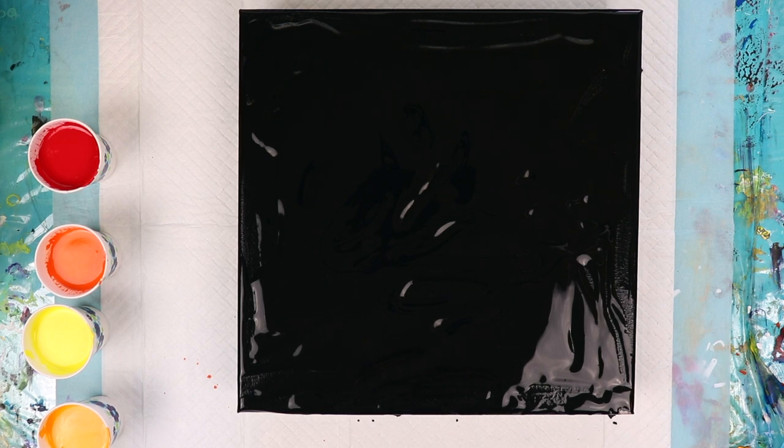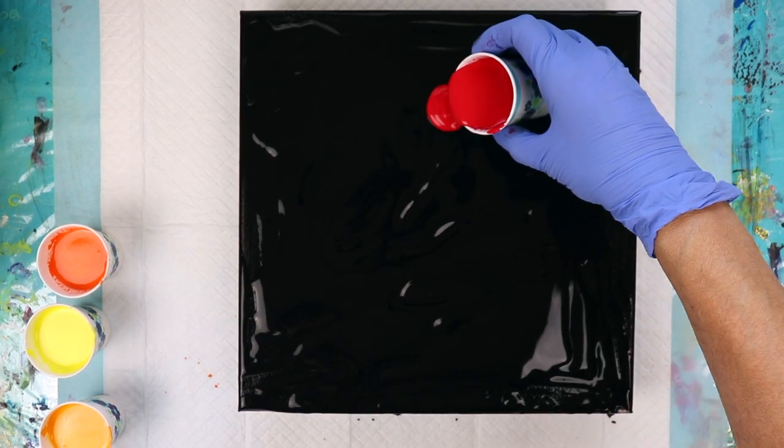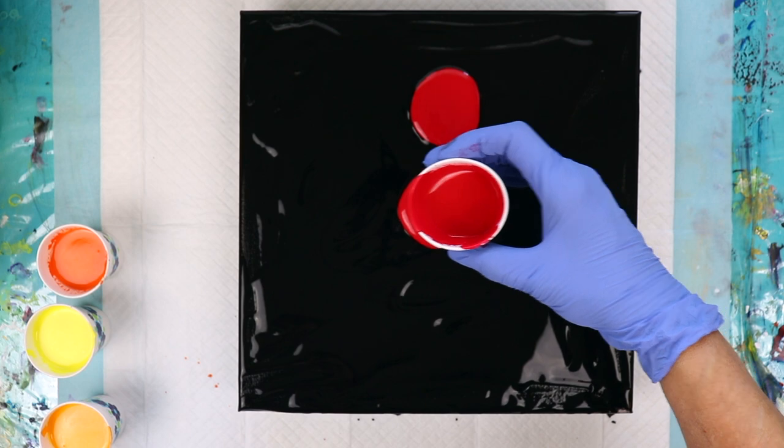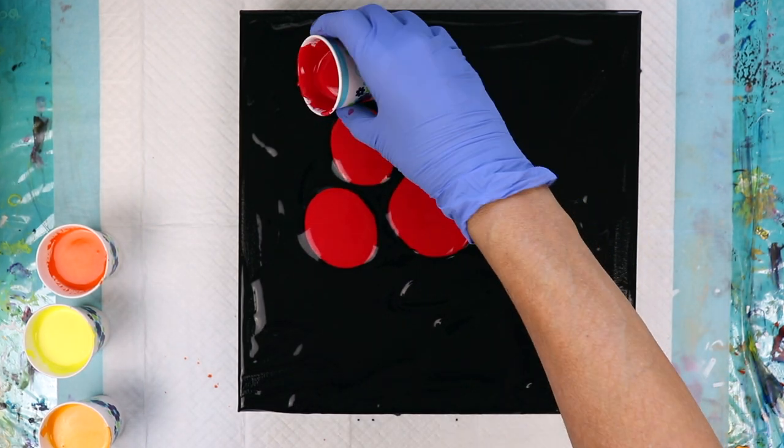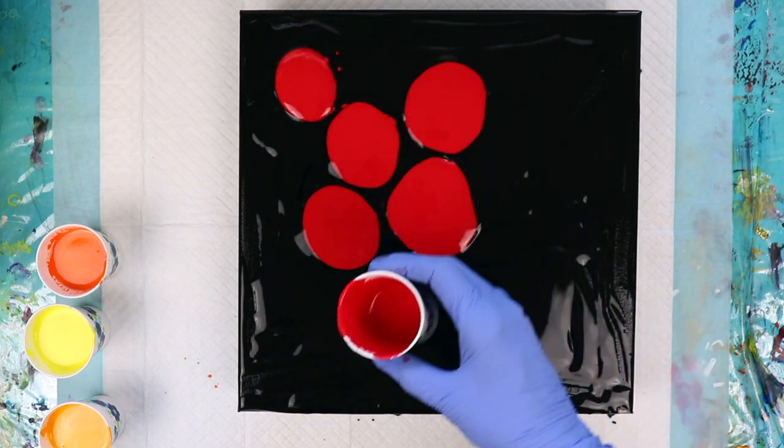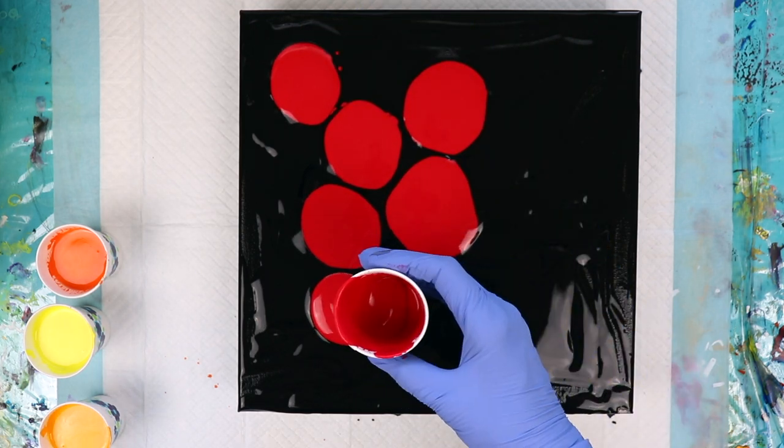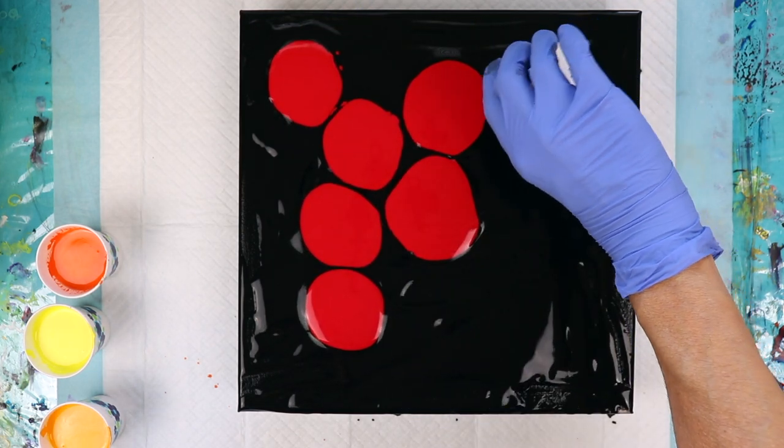So let's get started making our puddle pours. Last time I did a Dutch pour, I put the puddle pours more towards the back. So this time I'm going to bring them up a little bit closer and see what kind of effects I get from it. And they don't have to be perfect because I'm far from perfect on these things.